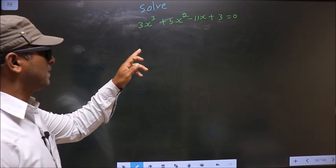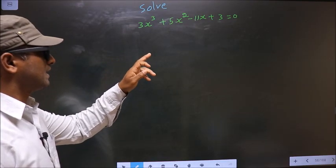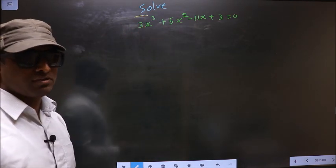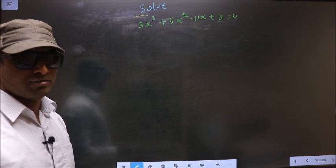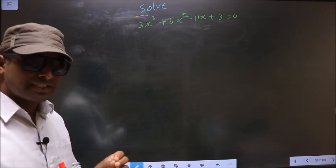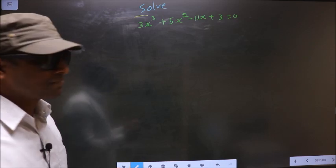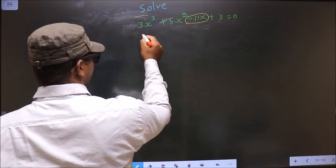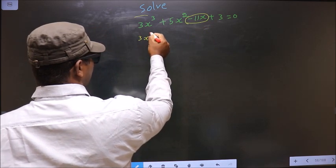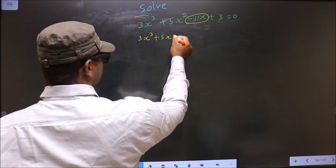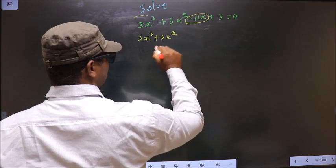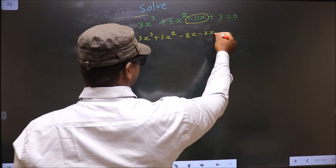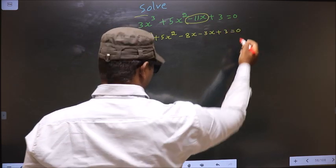Solve 3x cube plus 5x square minus 11x plus 3 equal to 0. They told us to solve, so we should find the value of x. For that, first I will change the x term, that is minus 11x. So 3x cube plus 5x square — in place of minus 11x, now we write minus 8x minus 3x plus 3 equal to 0.